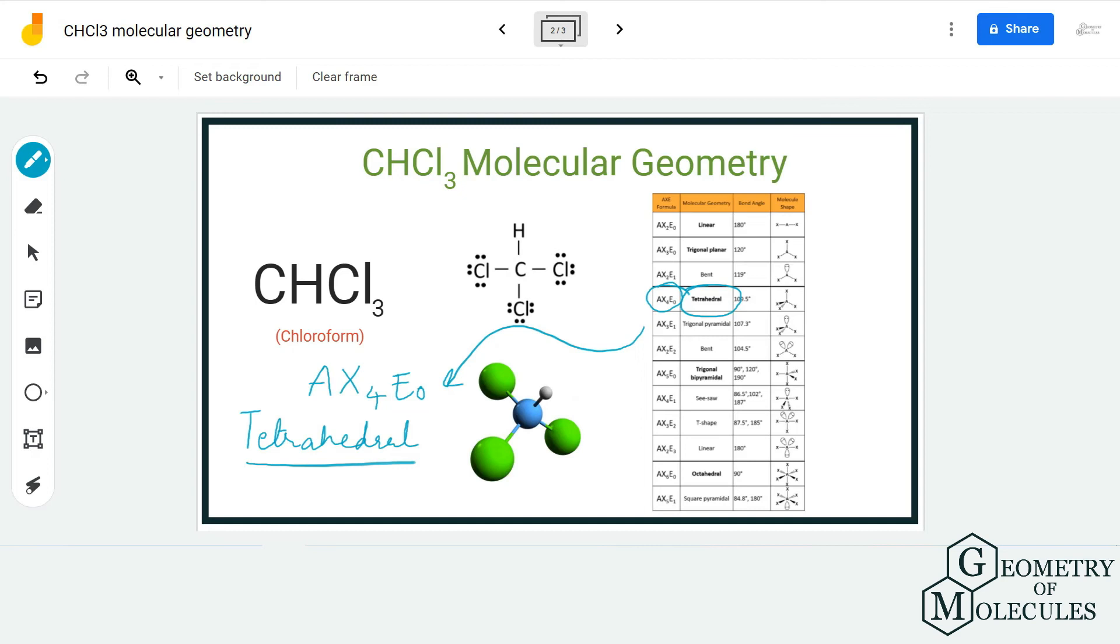This means that the molecular geometry of this molecule is tetrahedral with a bond angle of 109.5 degrees. So yes, that is it - the molecular geometry of CHCl3 is tetrahedral. I hope this video helps you to understand that.